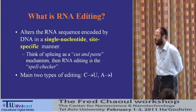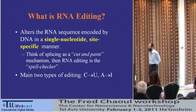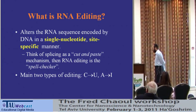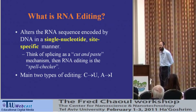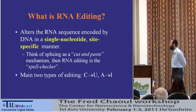RNA editing is a process in which the RNA sequence, after being transcribed from the DNA, is modified or changed, resulting in an outcome that is different than the one encoded in the DNA. In principle, it's somewhat against the central dogma because it gives us proteins that are not encoded in the DNA.